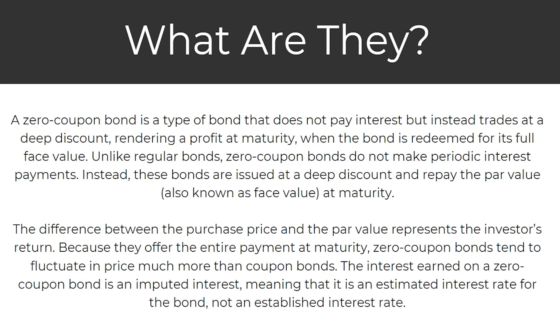Because they offer the entire payment at maturity, zero coupon bonds tend to fluctuate in price much more than coupon bonds. The interest earned on a zero coupon bond is an imputed interest, meaning that it is an estimated interest rate for the bond, not an established interest rate.